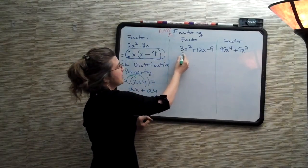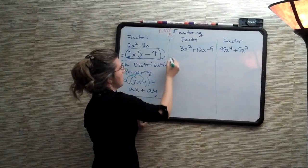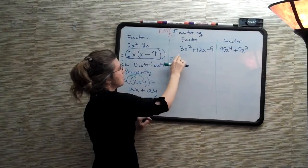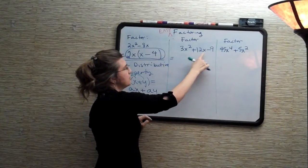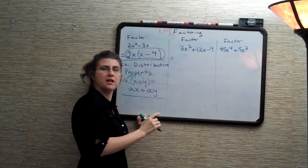Let's look at this one. 3x squared plus 12x minus 9. What is the biggest number that goes into 3, 12, and minus 9? Well, that number would be 3.